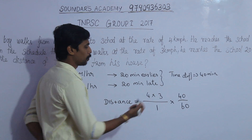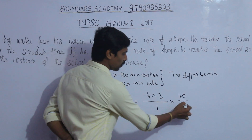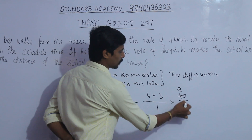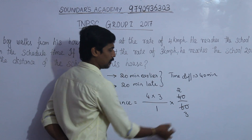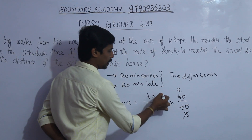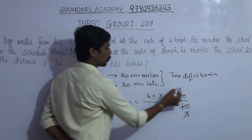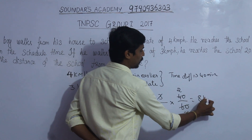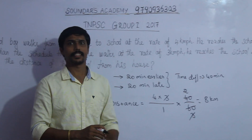Let's solve it. 4 multiplied by 3 is 12, divided by the speed difference of 1, multiplied by 40/60. Simplifying: 3 cancels, 4 twos are 8. The answer is 8 kilometers. Thank you.